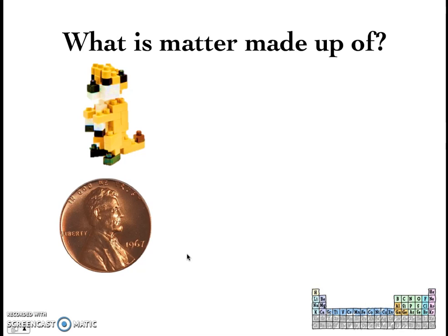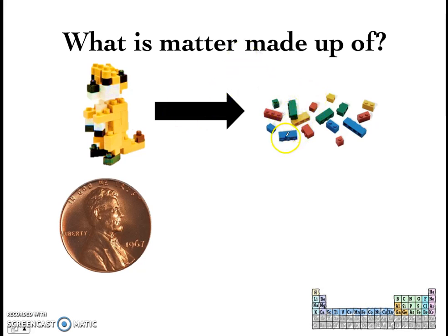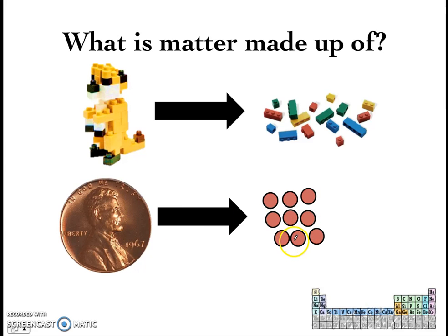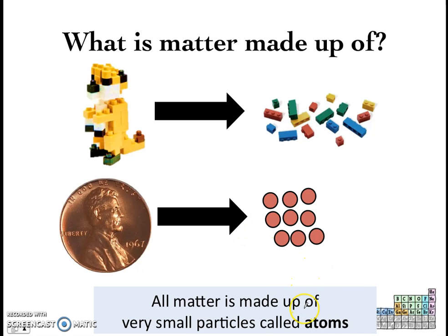Teachers have already started on this topic last week, so let's do a quick recap, starting with the question: what is matter made up of? To answer this, let's look at Pop the Weasel. He is a Lego figure, and if you break him down, you get Lego bricks. Now imagine this copper coin. If you were to break it down to as small as possible, you would find it is also made up of many small particles — similar to how Pop the Weasel is made up of many smaller Lego bricks. Scientists have given these particles a name: they're called atoms. So all matter is made up of many small particles called atoms.